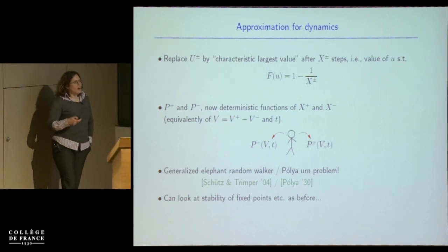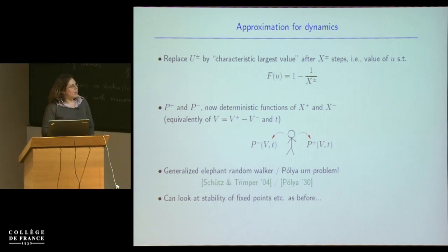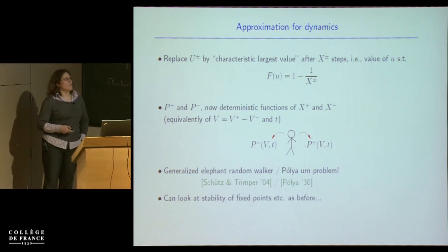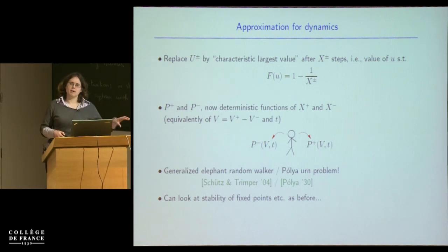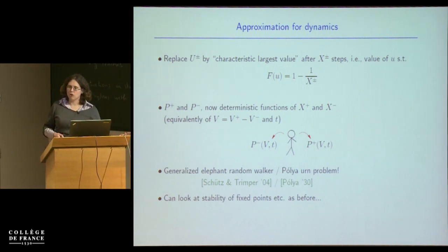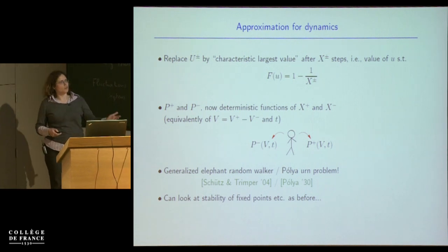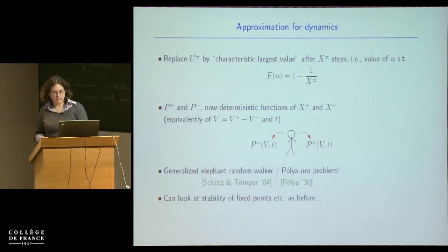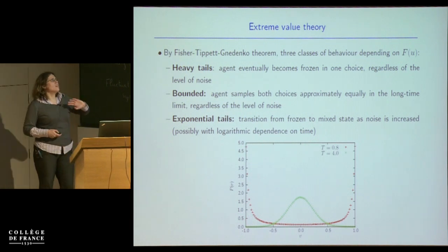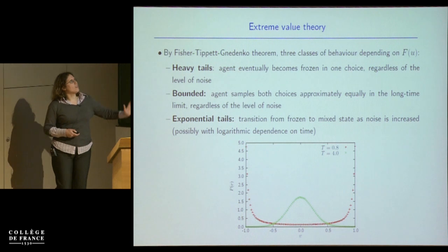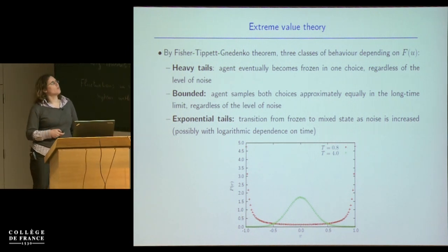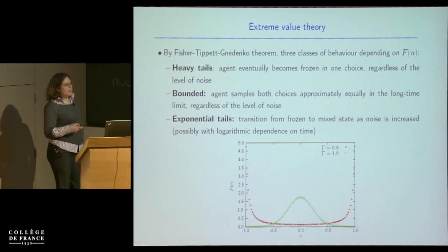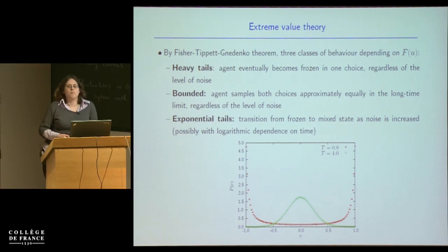In fact this is a rather ugly generalisation of the original elephant random walk — or, going further back in the mathematics literature, it's a nonlinear Polya urn problem. You can then play exactly the same games as in the first half: look for fixed points, check their stability, and find out whether you get stuck in the frozen state or the mixed state. The power of extreme value theory tells you that there are only certain universal behaviours for the scaling of the maximum, and within this approximation there are only three possibilities.